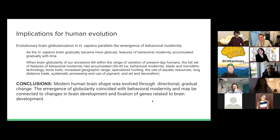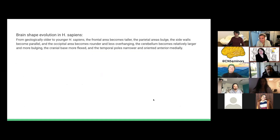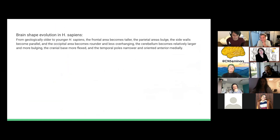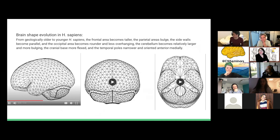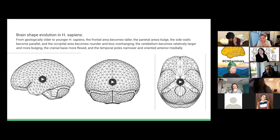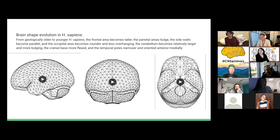Thank you very much — super exciting, and thanks for preparing all those slides; the videos were absolutely stunning, the evolution from one shape to the other. I have so many questions. I'd like to focus on the main one: they used principal component analysis to simplify the change of shape and compare across different hominin species. When they did that, is there some form of trade-off between constraints — where you cannot have a brain with too much of that shape or too little?